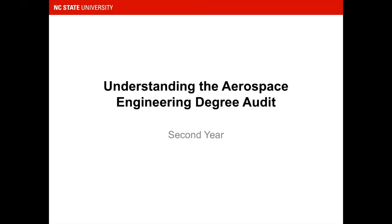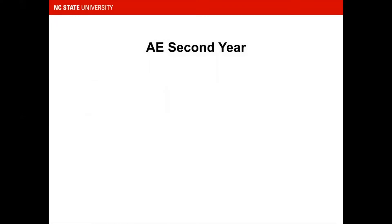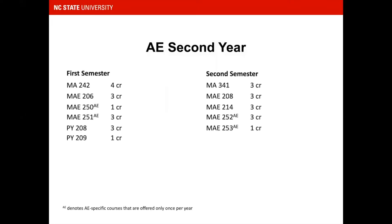Understanding the Aerospace Engineering Degree Audit, Year 2. Most students have CODAed into their desired engineering major by the second year. In the Aerospace Engineering curriculum, non-AE-specific MAE courses such as MAE 206, MAE 208, and MAE 214 are open to students pre-CODA. AE-specific courses are reserved for post-CODA students, no exceptions. It is important to note that AE-specific courses are offered only once a year, so plan carefully and pay close attention to prerequisites.